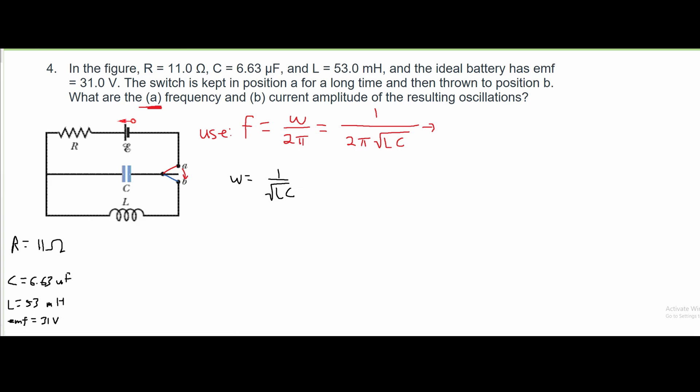After we have this written down, we can see what we need to plug in. So we have our F, and we are setting that equal to 1 over 2 pi and then we have a square root. Our L is 53 millihenries. To convert this into henries, which is what we need, we need to multiply this by 10 to the negative 3.